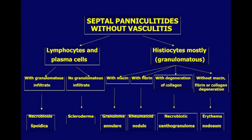Those were the septal paniculitis with vasculitis. Now we move to septal paniculitis without vasculitis. The next step is to look at the inflammatory infiltrate — according to which cells are most prominent, we can make the specific diagnosis. Let's start with erythema nodosum. In the past, many authors said the diagnosis of erythema nodosum was a septal paniculitis established by exclusion. In my opinion, this is not true. Most of the time we can make a specific diagnosis of erythema nodosum on the basis of specific histopathologic findings.